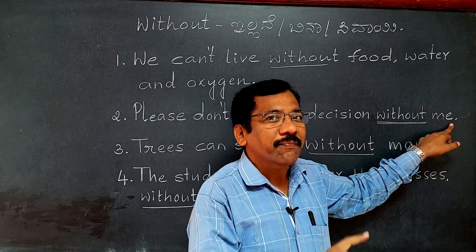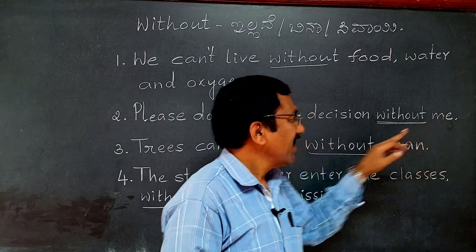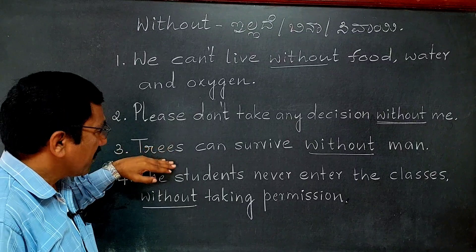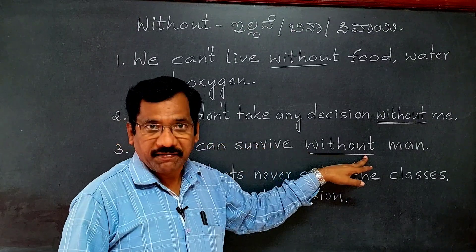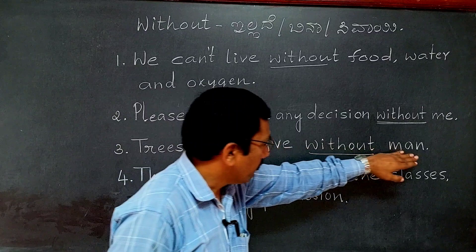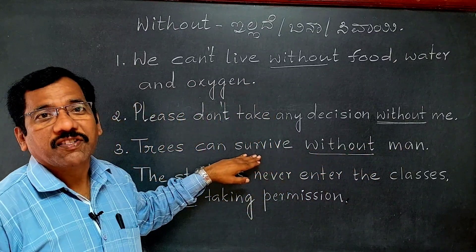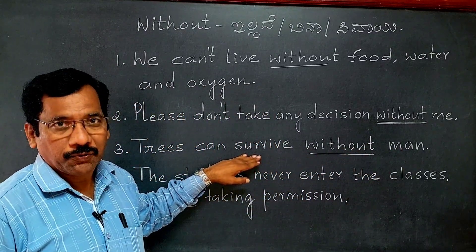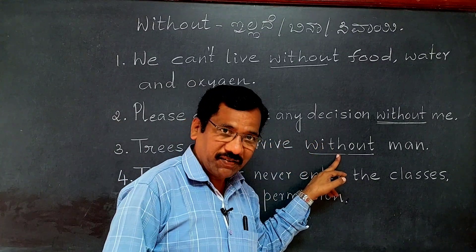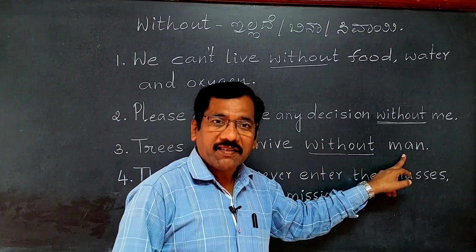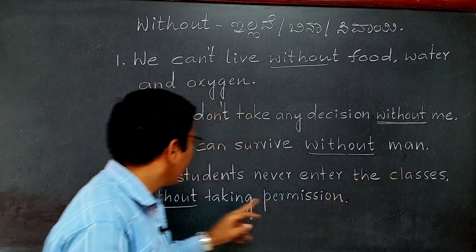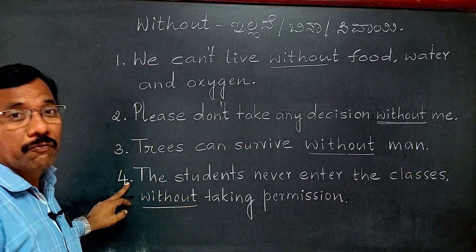Without them means avaru illadi. Third example: Trees can survive without man. Means: maragalu manushana illadi jivisaballavu, badukaballa. Here 'without' is a preposition. Without man means manushana illadi.